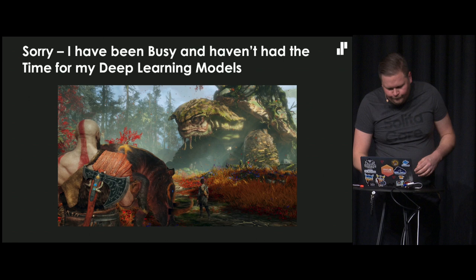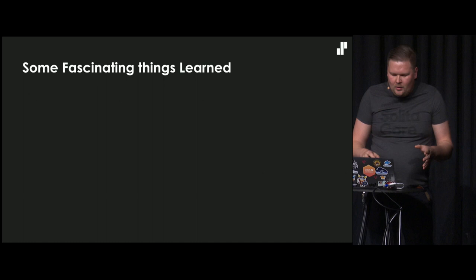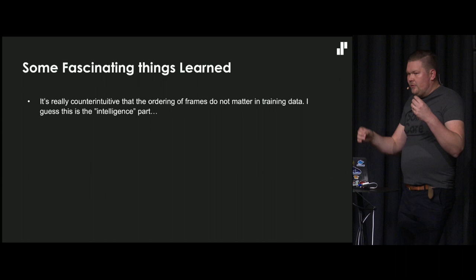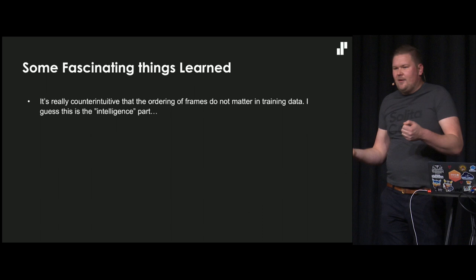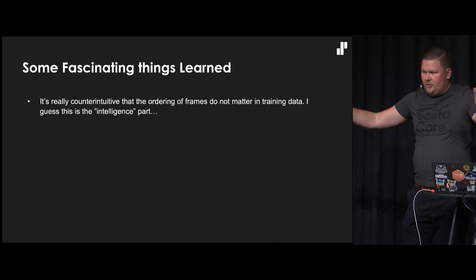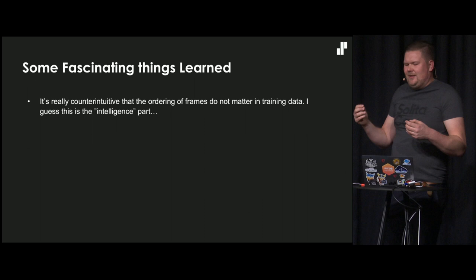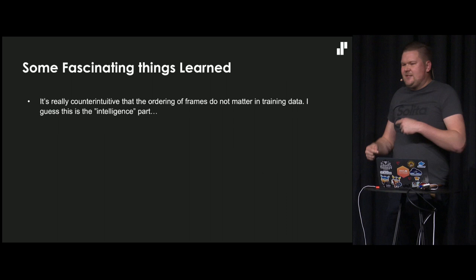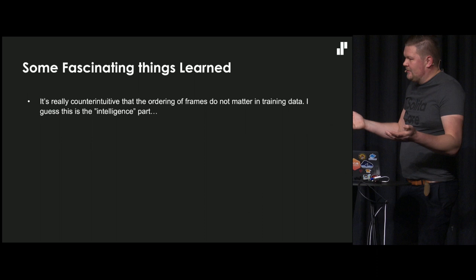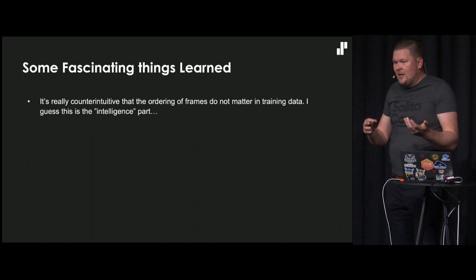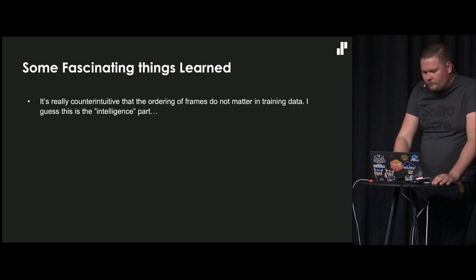Some things I've learned that are fascinating: because when you do it this way, which is the most simple way of doing visual input game playing, it's really counterintuitive that when you have training data that is frame after frame after frame, you just shuffle everything. It doesn't have any context - it doesn't know what the neural network said in the last frame. And for some reason it kind of works still. It's counterintuitive why it works in games when the neural network has no data on context.